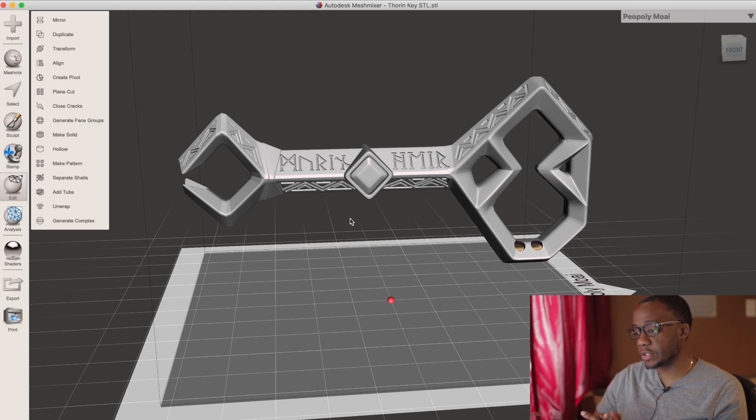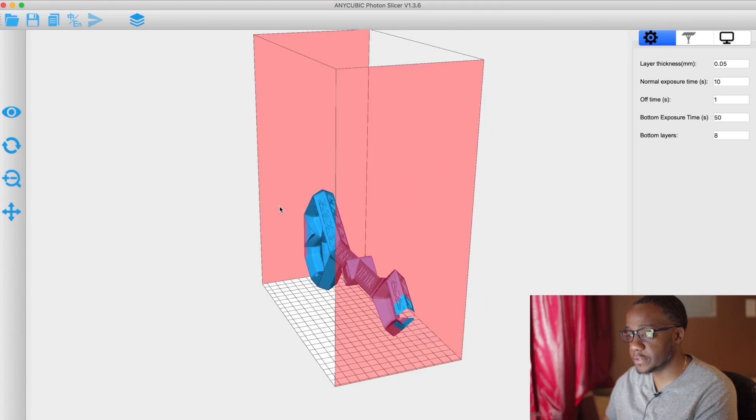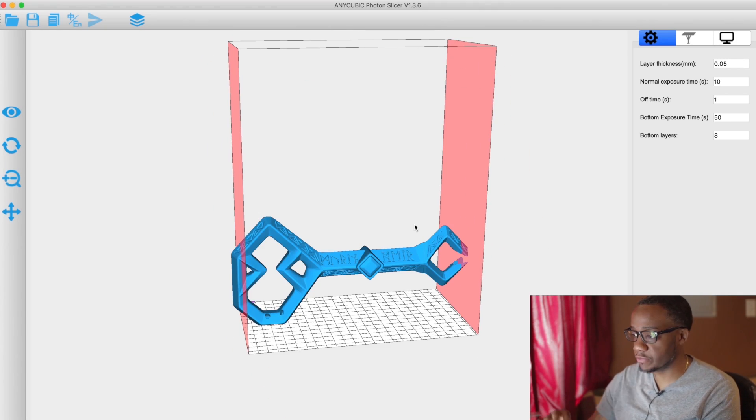We're going to export this out and bring it into another program so we can add the support that's needed to print this. Now we can do it in Mesh Mixer, but I prefer to do it in a different program. So here is the program that I was referring to. It has a nice auto support generator.